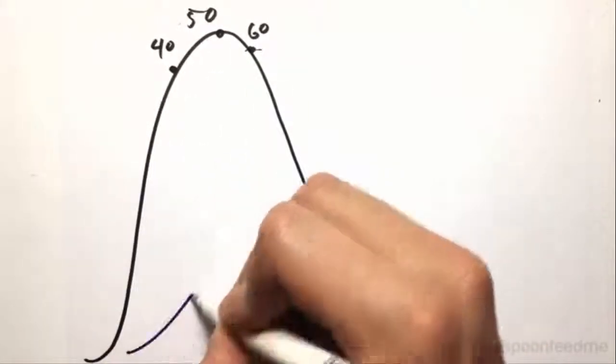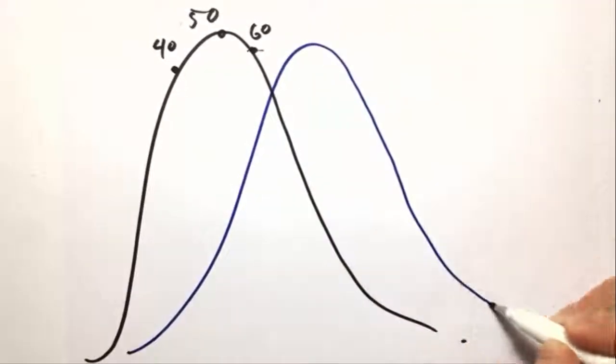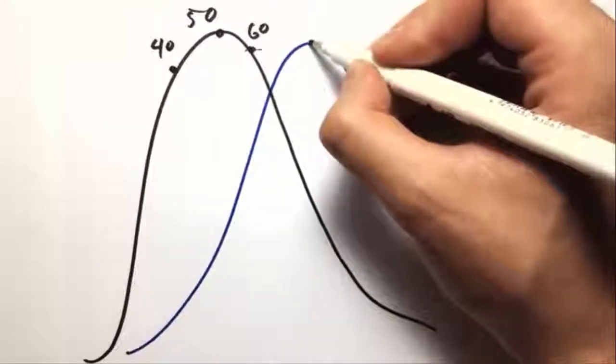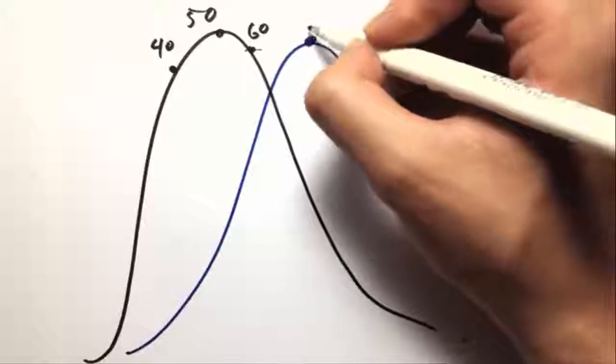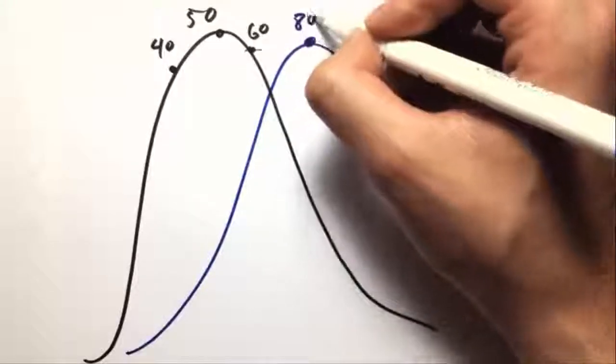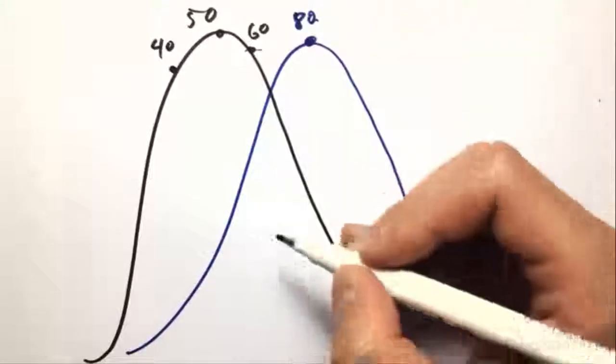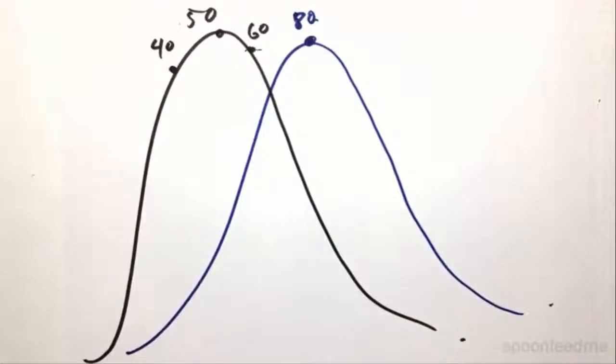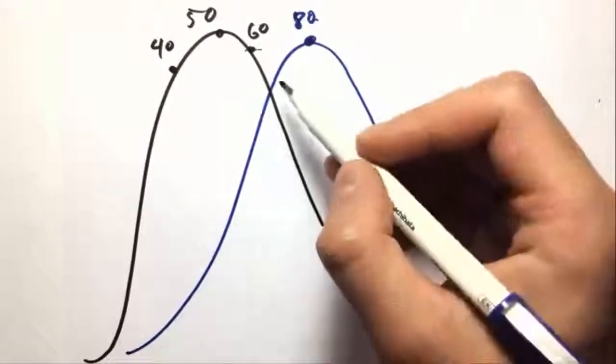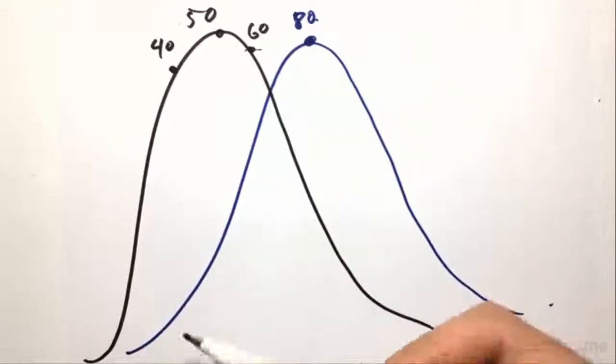But if it was a weighted coin, it would look something like this. And it's more likely to go heads 80 and tails 20. So it's the same kind of shape. It's a normal distribution because it's the sampling distribution.